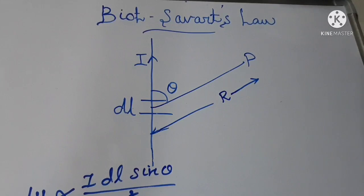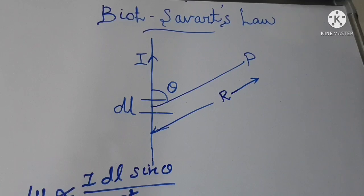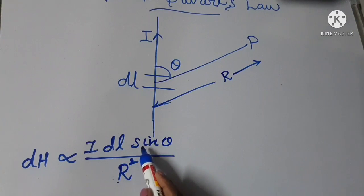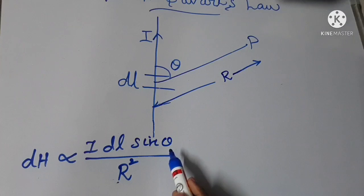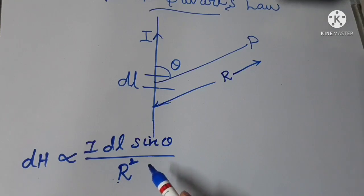Biot-Savart's law states that the differential magnetic field intensity dH produced at a point P by the differential current element IDL is proportional to the product IDL and the sine of the angle theta between the element and the line joining P to the element, and is inversely proportional to the square of the distance R between P and the element.